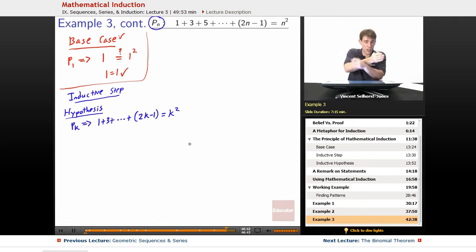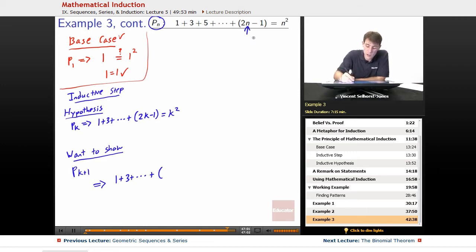Okay, so with that assumption that this thing is true, we need now to show that k plus 1 is going to be true as well. So now we want to show that k plus 1 is true. So showing k plus 1 is true is going to be equivalent to showing that 1 plus 3 plus dot, dot, dot, plus 2 times k plus 1 minus 1 equals k plus 1 squared, swapping out that n for k plus 1.